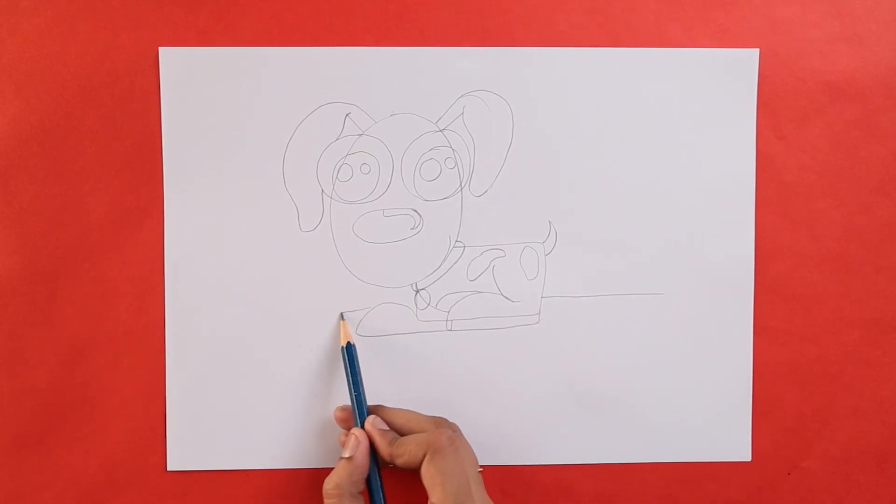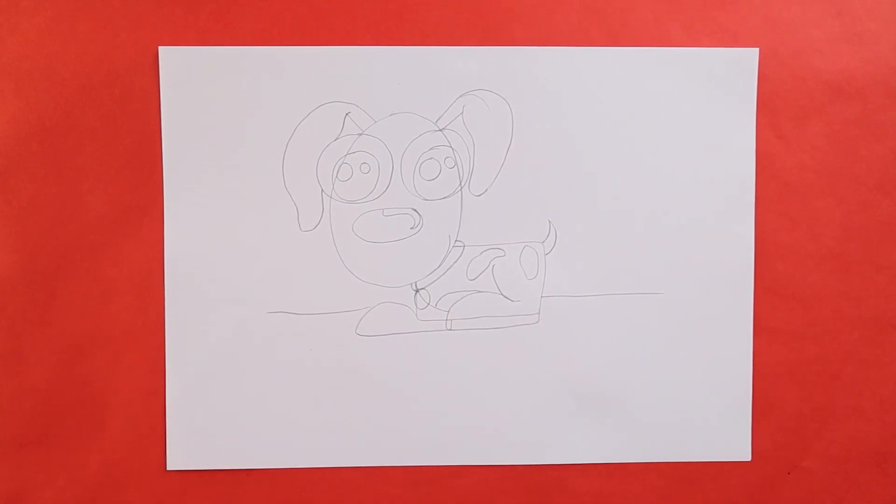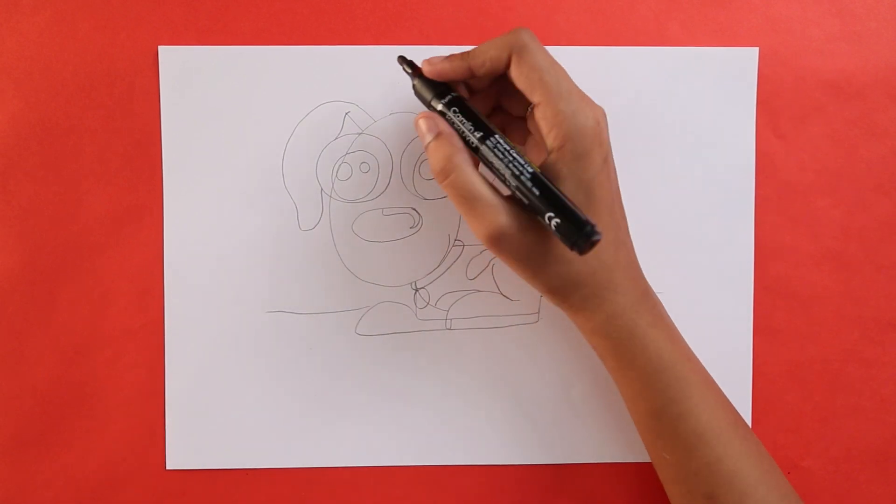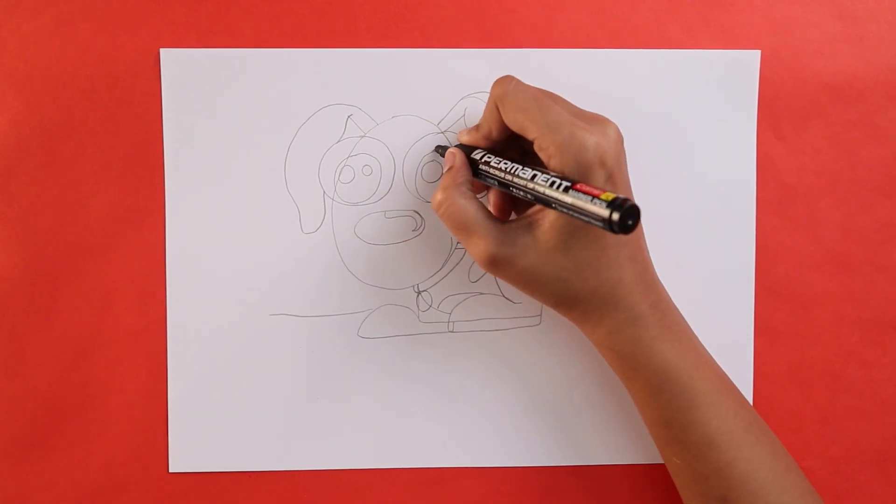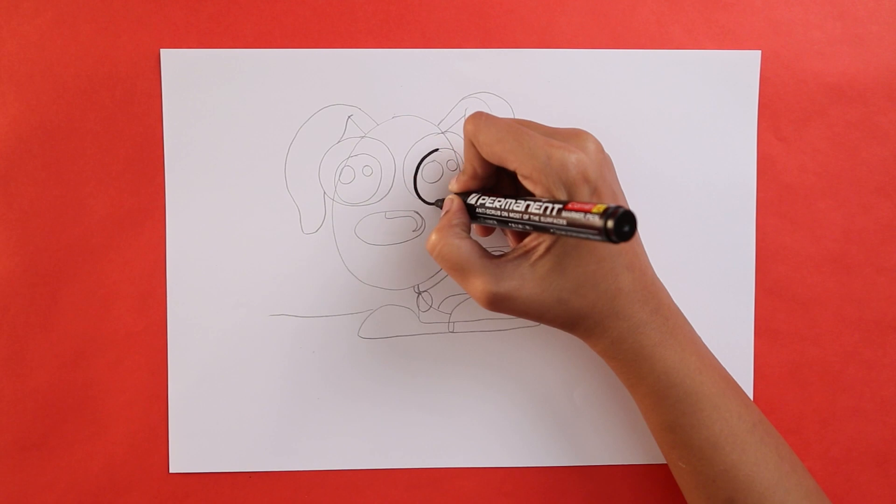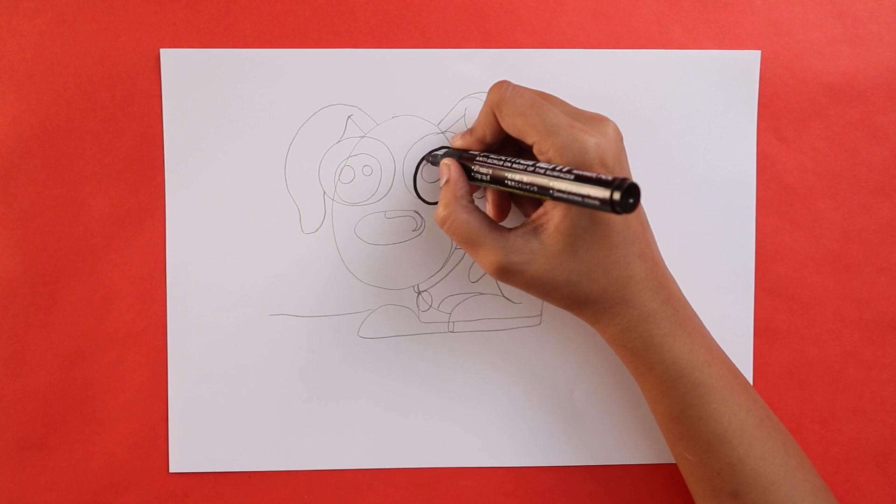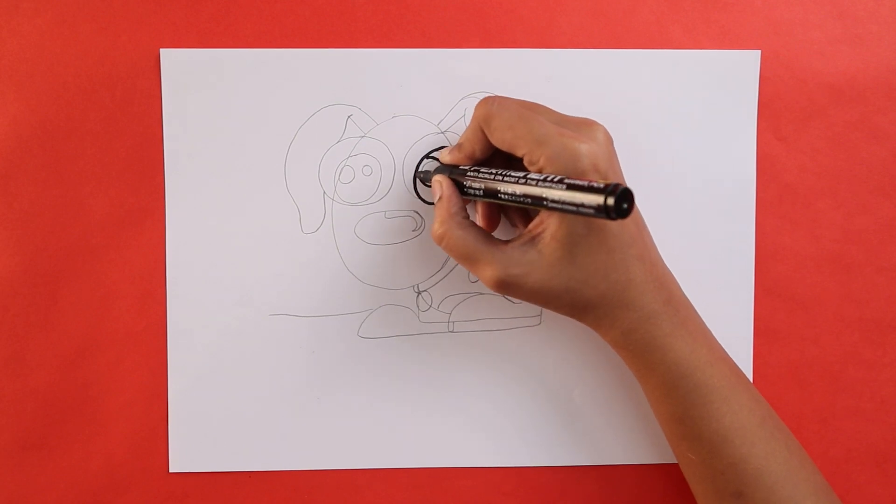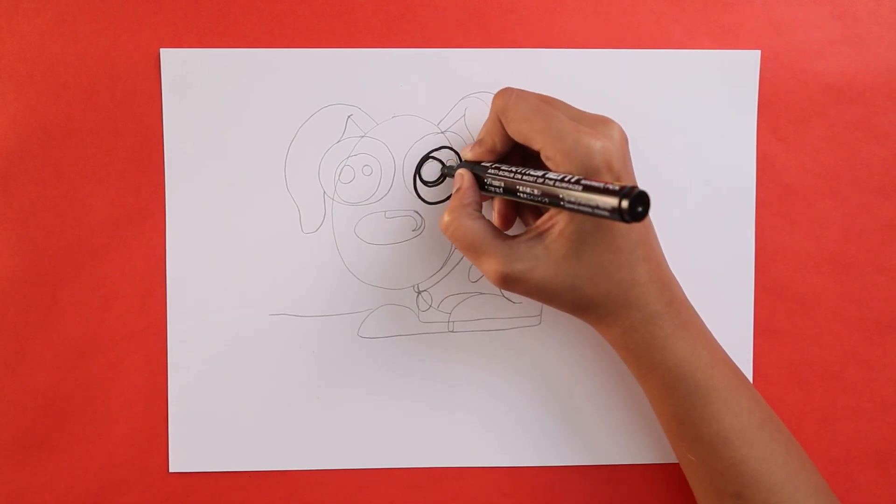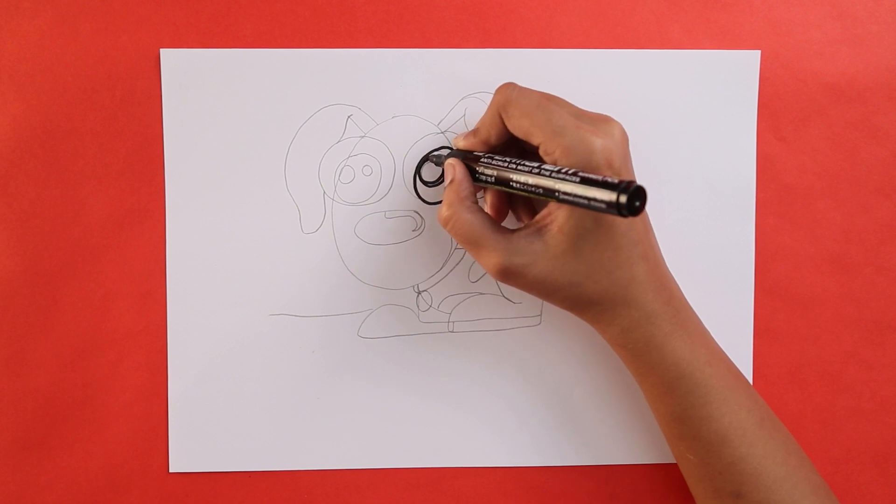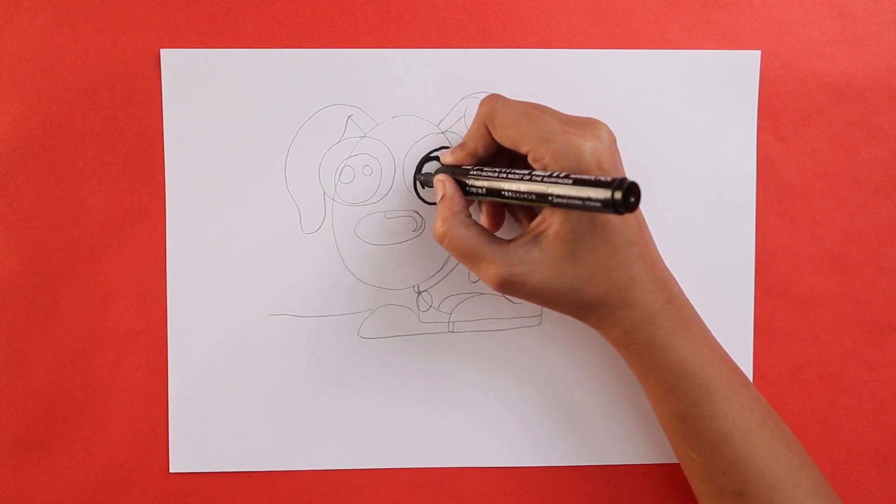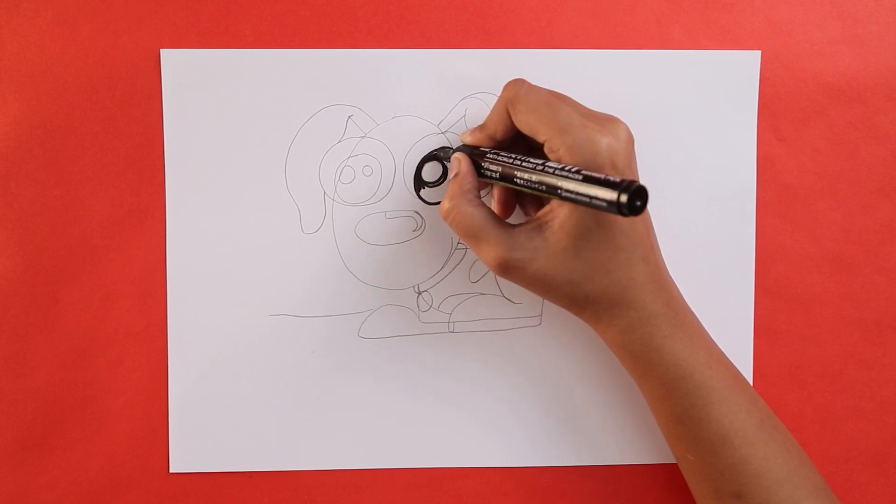Now it's time to go over the entire dog with a black marker. We can start off with the eyes. Be careful to go over only the pencil markings. While y'all are doing that, here is another fun fact.